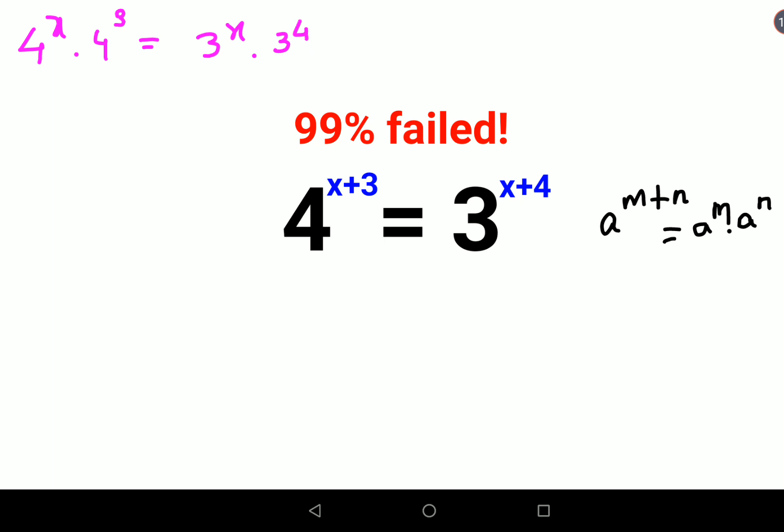Now what we will do next is try and put the numbers on one side and the variables on another side. First we will take 4 raised to x and divide both sides by 3 raised to x. Let the 4 raised to 3 be as it is. Here also we have 3 raised to x times 3 raised to 4. Now I will divide both sides by 3 raised to x.